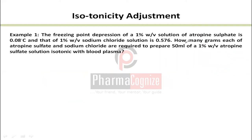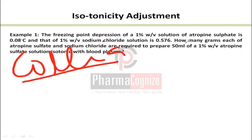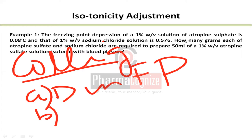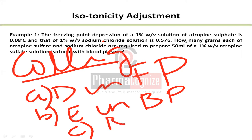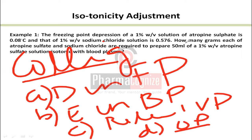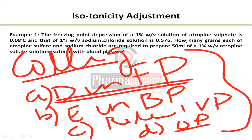To adjust isotonicity, we use colligative properties. There are four colligative properties: depression in freezing point, elevation in boiling point, relative lowering of vapor pressure, and osmotic pressure. The key rule is that if two solutions share the same value for one colligative property, all four properties are automatically the same.